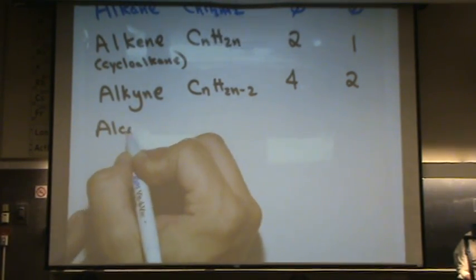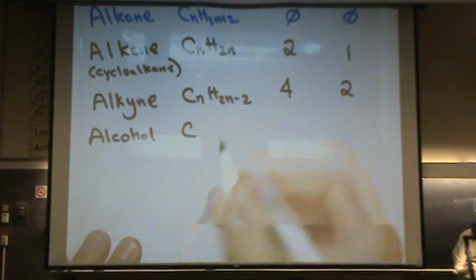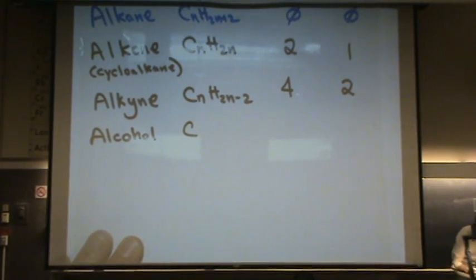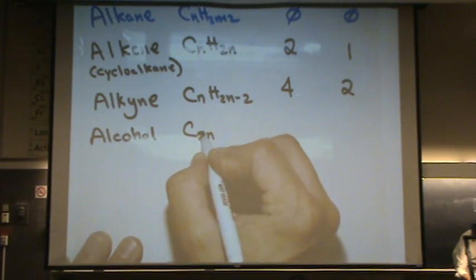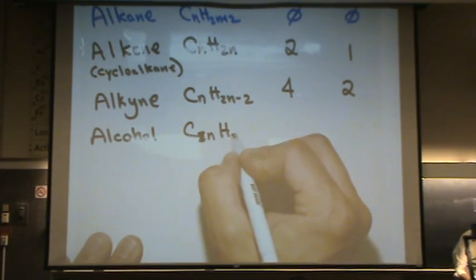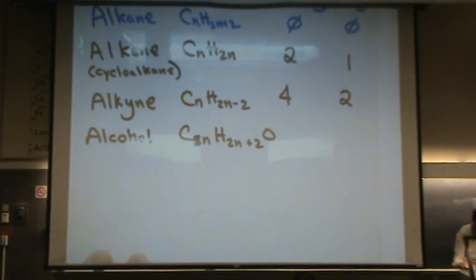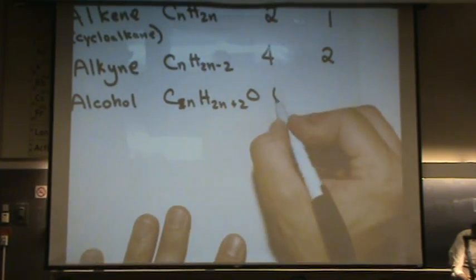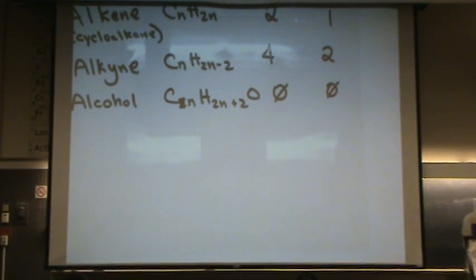Let's try an alcohol. Now you don't need to know these formulas, but you need to know how to do the calculation. So alcohol has this formula, CnH2n plus 2O. In this case, there's no hydrogens missing. It has the maximum amount, so it's zero, and so it has no degree of unsaturation.